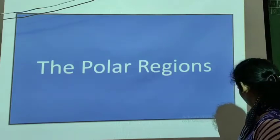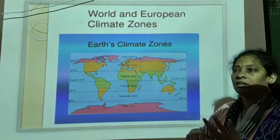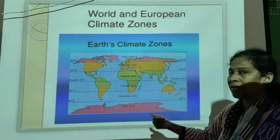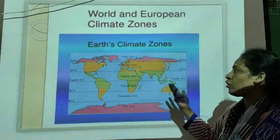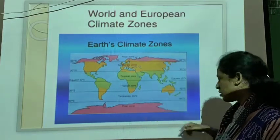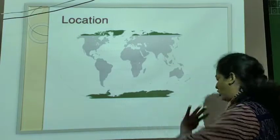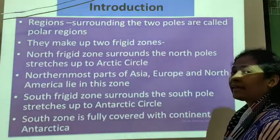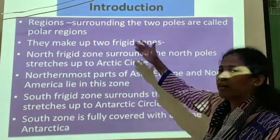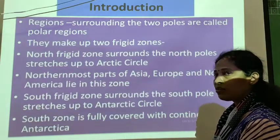I explained what polar regions are, and I showed one picture which explained the divisions of the climatic zones — where the climatic zones are seen, the frigid zone, the equatorial belt, the tropical zone. This big area shows the frigid zone and its location. The surroundings of the two poles are called polar regions. I also explained the non-frigid zone and sub-frigid zone.